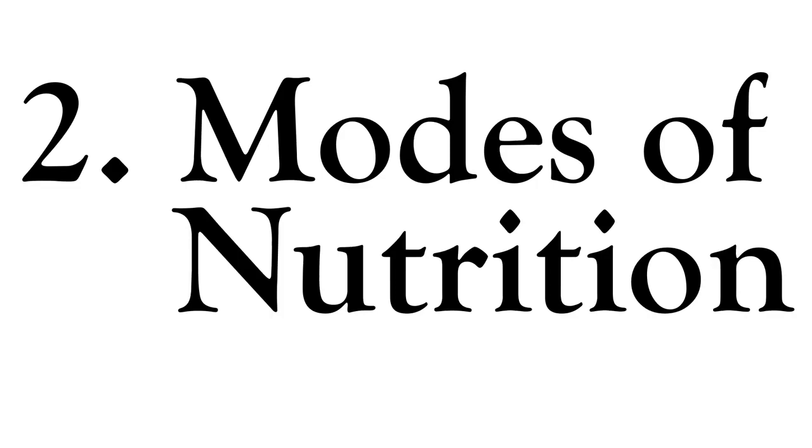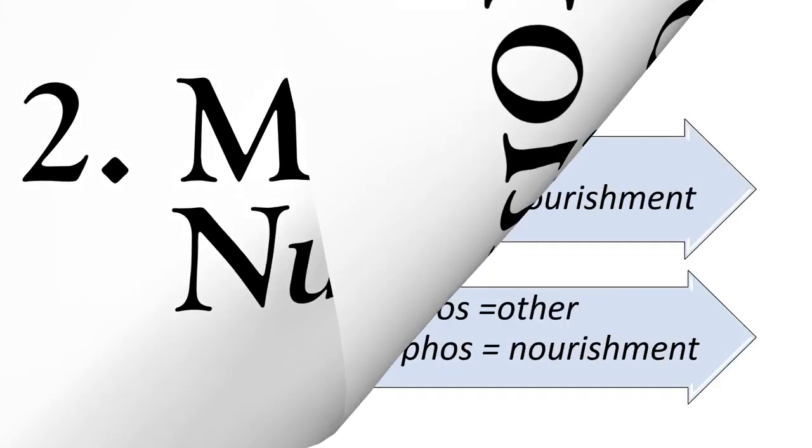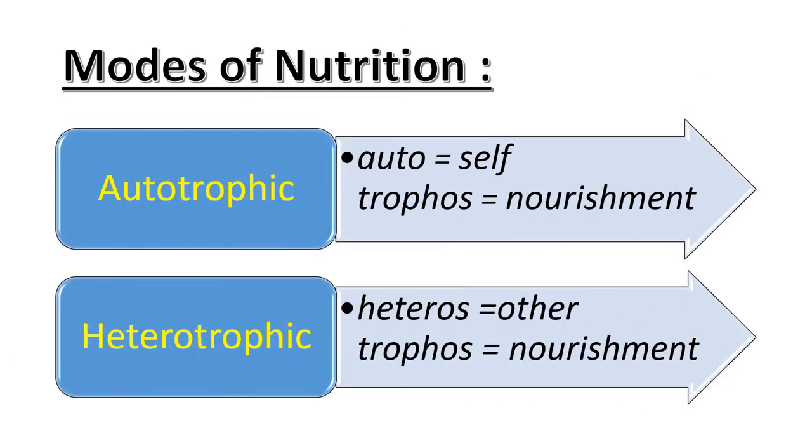Now, let us look at the second topic, Modes of Nutrition. Living organisms exhibit two modes of nutrition, namely, autotrophic nutrition and heterotrophic nutrition.